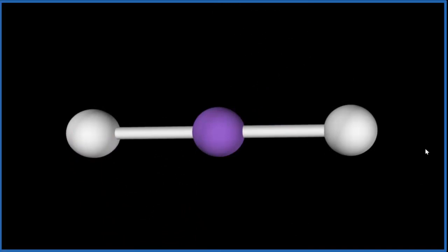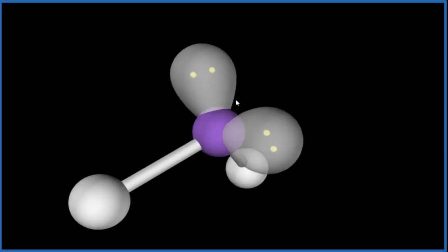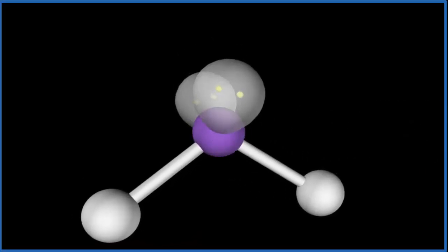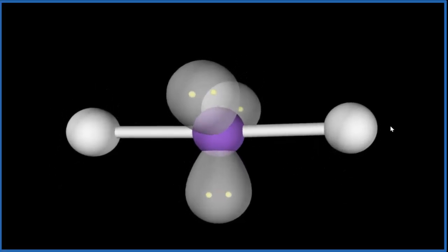But lone pairs, they occupy space. They'll actually push these iodine atoms around. They'll repel them. So let's add our three lone pairs. One, you can see it pushes down, and then we've got two more. Two, and finally we add the third one, and we end up with the linear molecular geometry for I3-.